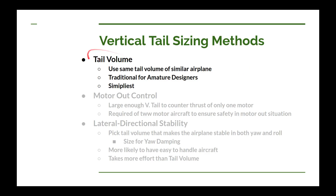In this video we're going to talk about a method using tail volume, or vertical tail volume. Tail volume is length multiplied by surface area — specifically the distance from the center of gravity of the airplane to the 25% mean aerodynamic chord of the vertical tail, multiplied together to give you tail volume. You find airplanes similar to the one you want to design and use a similar tail volume. This is a pretty traditional and effective method for amateur airplane designers because it's the simplest to do.